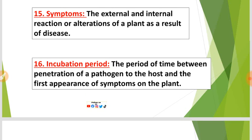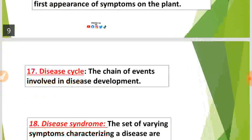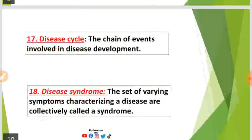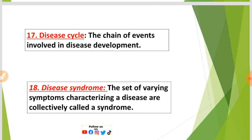Number sixteen: Incubation period — the period of time between penetration of a pathogen into the host and the first appearance of symptoms on the plant. Number seventeen: Disease cycle — the chain of events involved in disease development.